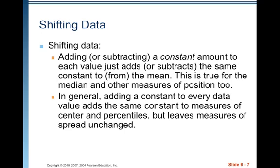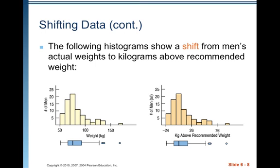For example, if I took the height of everybody in the classroom and averaged it out — say it was 64 inches — then had everybody put on two-inch heels and took the average again, the average would be 66 inches, but the spread wouldn't change. There would be the exact same amount of variability among all the heights. The following histograms show a shift from men's actual weight to kilograms above recommended weight — you can see it's just a shift.